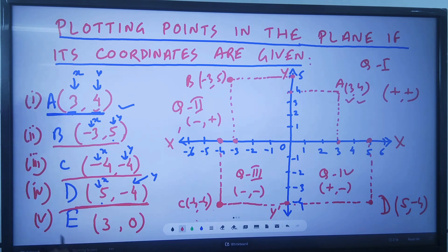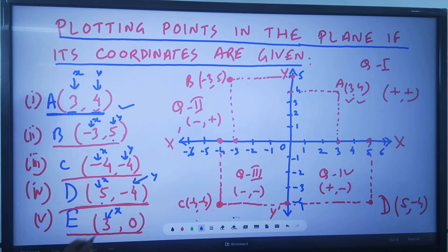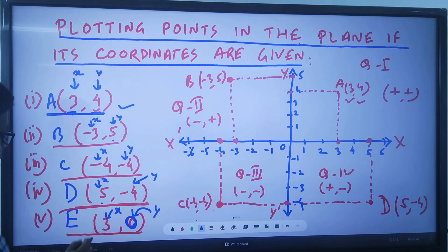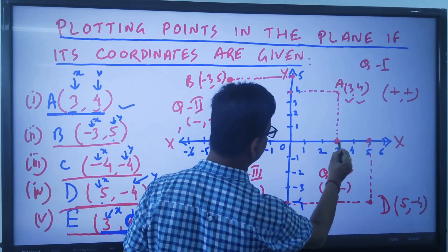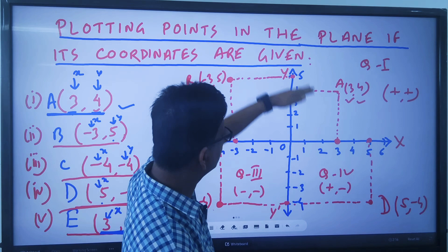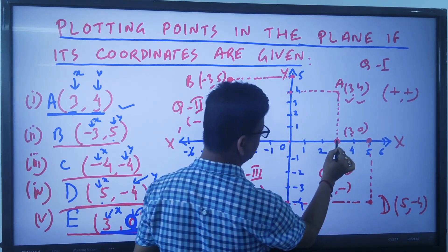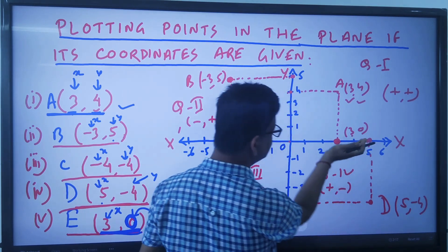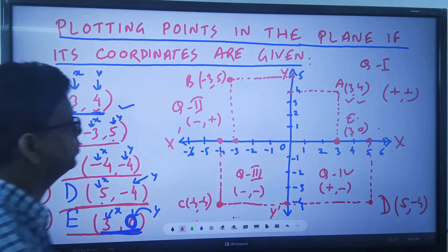Finally, I have another point E of (3, 0). The corresponding x value is 3 and the corresponding y value is 0. Since the y value is 0, this point lies directly on the x-axis — it is neither moving upward nor downward. So x value is 3, y value is 0, and this point E lies on the x-axis. This is how the plotting must be done in the Cartesian plane.